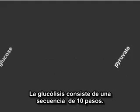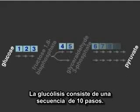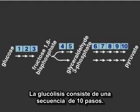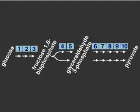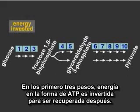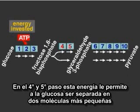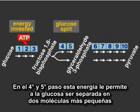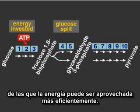Glycolysis involves a sequence of 10 steps. In the first 3 steps, energy in the form of ATP is invested to be recouped later. In the 4th and 5th steps, this energy allows glucose to be split into two smaller molecules from which energy can be harnessed efficiently.